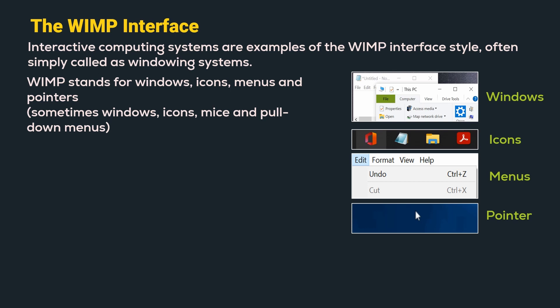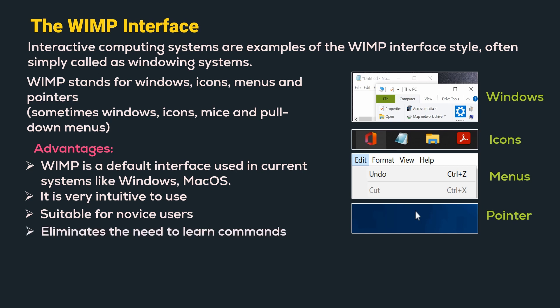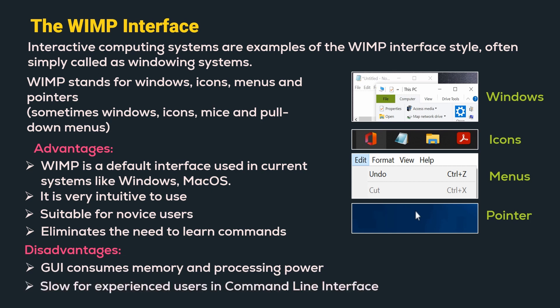Now let us understand few of the advantages. WIMP is a default interface used in current systems like Windows and macOS. Hence it is very intuitive to use and it is suitable for novice users. It also eliminates the need to learn commands. Now let us understand few of the disadvantages. GUI consumes memory and processing power, and the interface could be slow for more experienced users compared to command line interface.